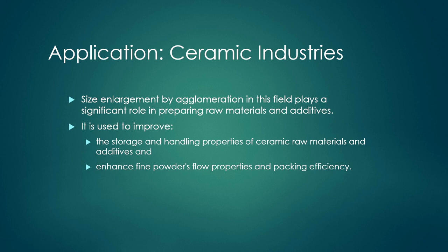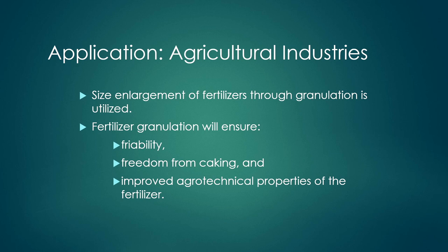In ceramic industries, size enlargement by agglomeration is required. Raw materials are mixed with additives to make fillet or granular forms, improving storage, handling properties, and the flow properties and packing efficiency of ceramic raw materials and additives. In agricultural industries, size enlargement of fertilizers through granulation is mainly used to ensure freeability, freedom from caking, and improved agrotechnical properties of the fertilizer.